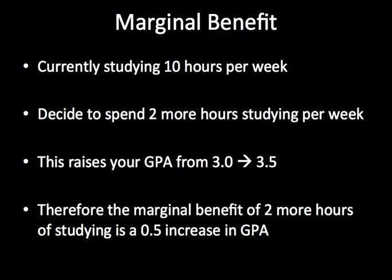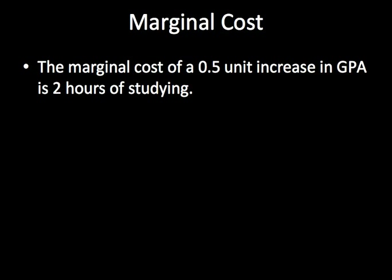If we want to express this in terms of marginal cost, all we have to do is represent the opposite relationship. In this case the marginal cost of a 0.5 unit increase in GPA is 2 hours of studying per week.